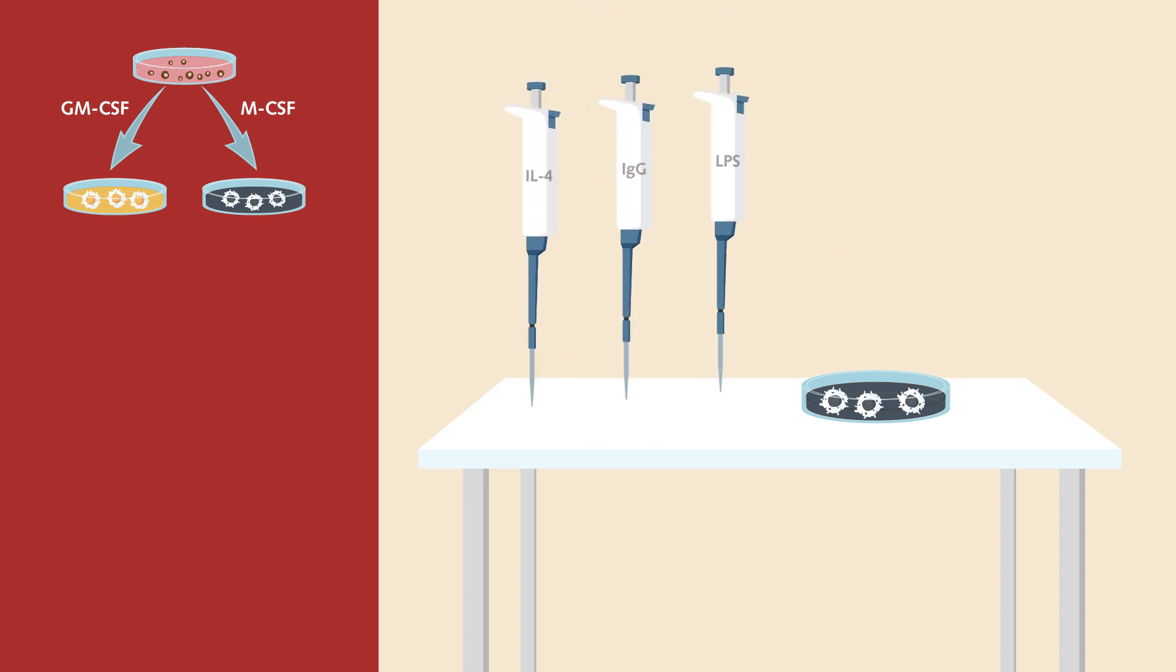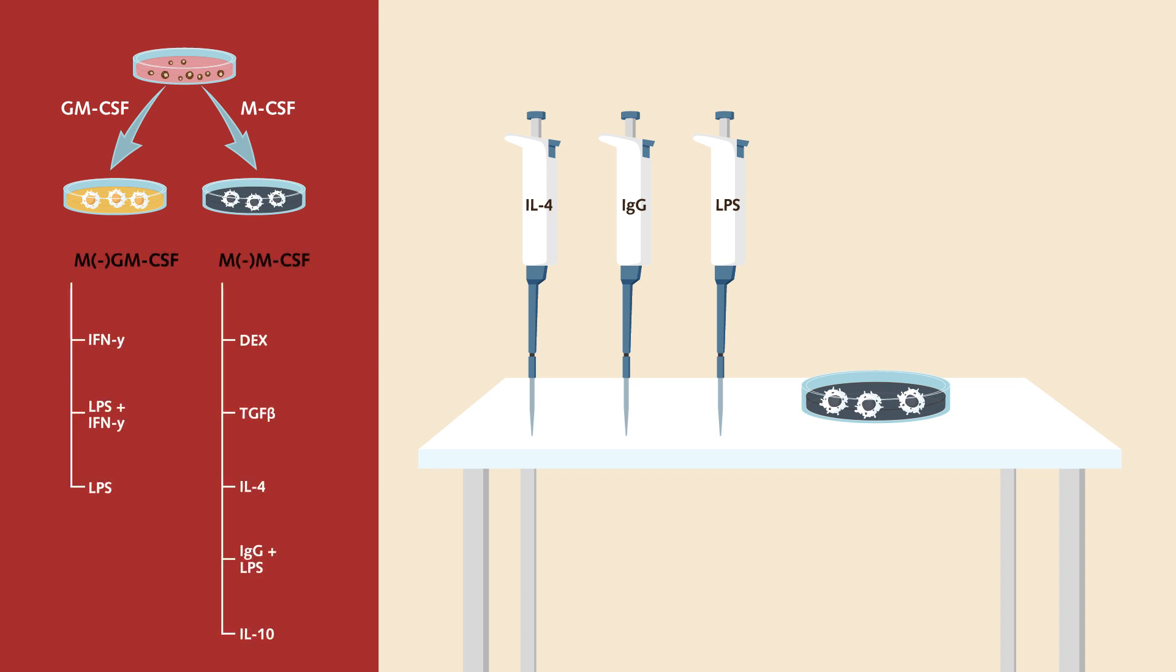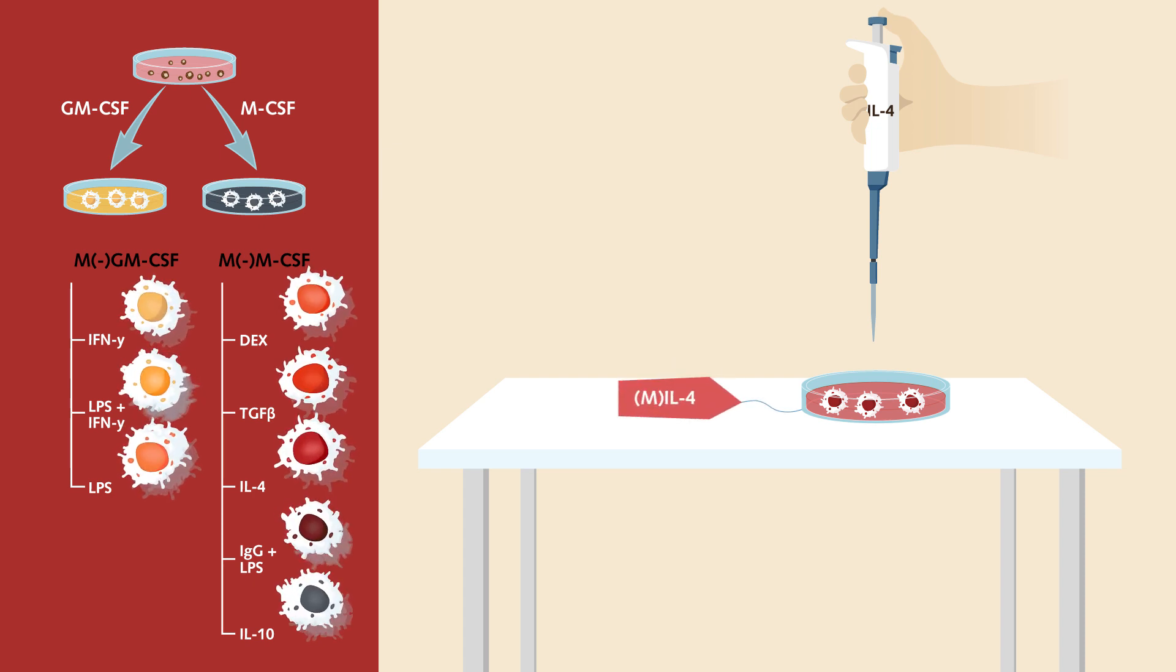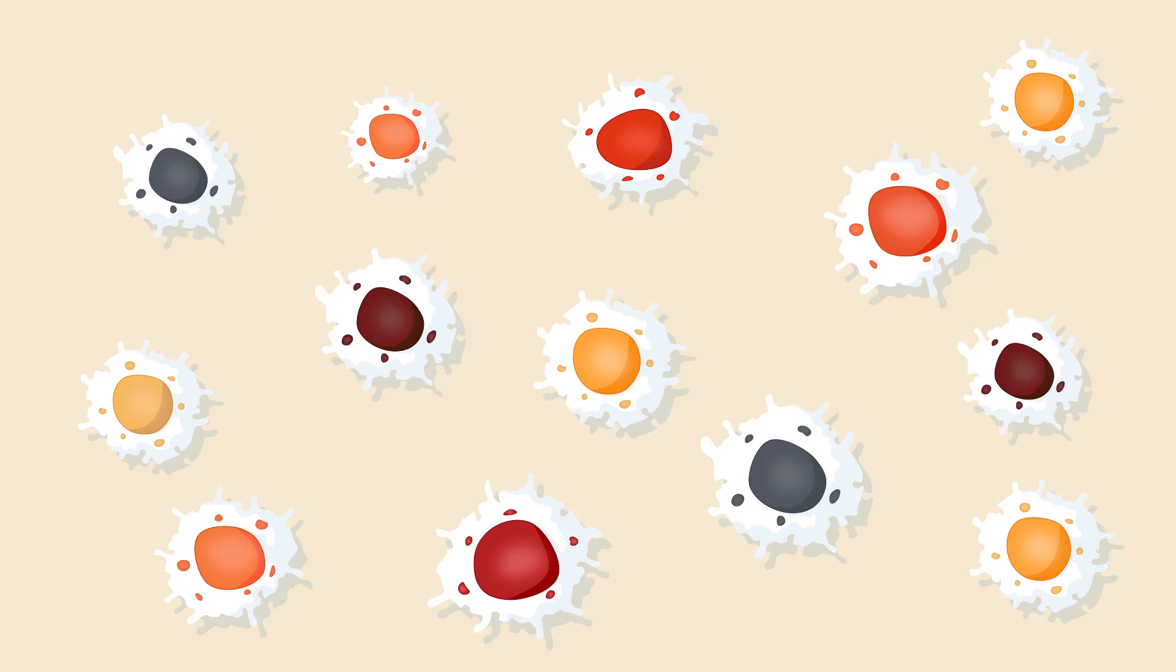To activate these macrophages, specific activators are added to the culture. It can be interleukin, immunoglobulin, or lipopolysaccharide, for example. As a result, a colony is obtained with distinct macrophage subtypes classified by their activation factors.